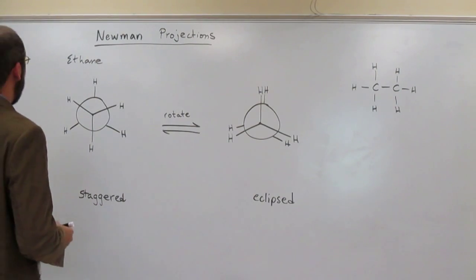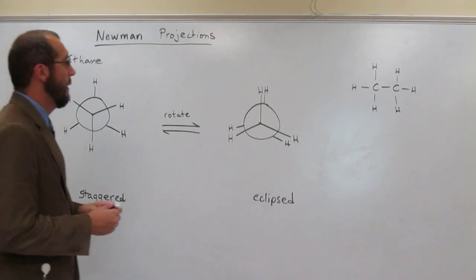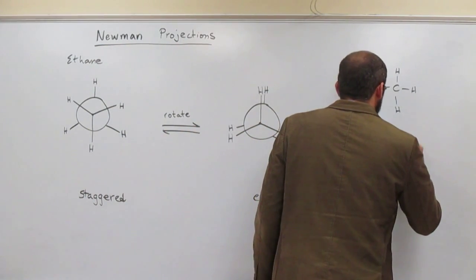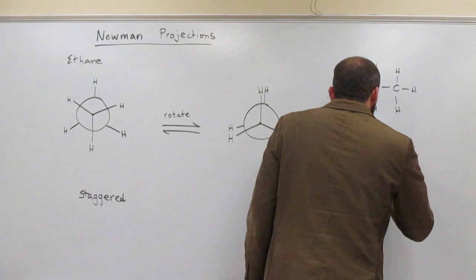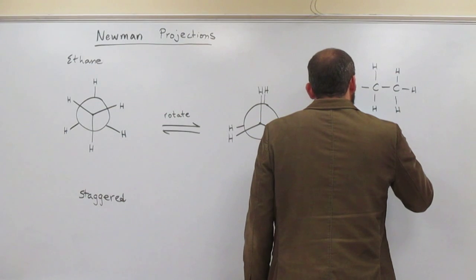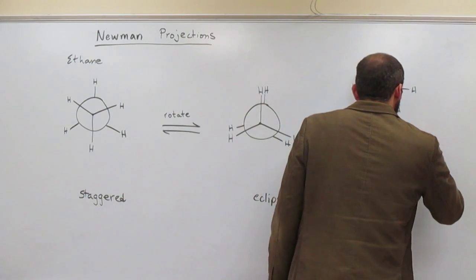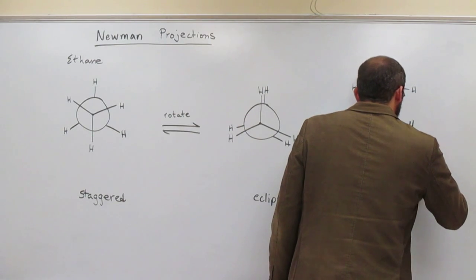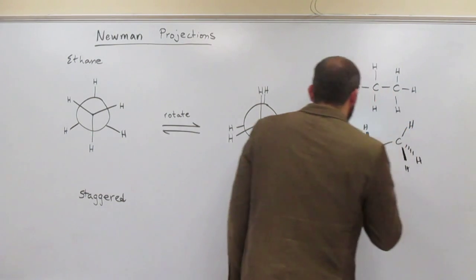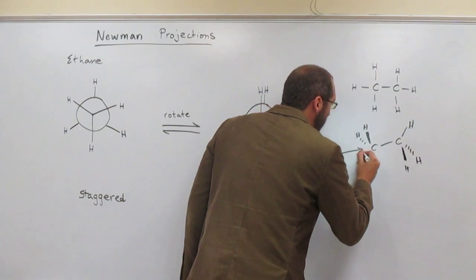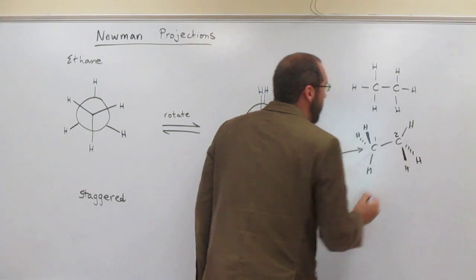So what we're doing here, when we see this model of ethane, what we're doing is actually looking down the C1-C2 bond, like that.